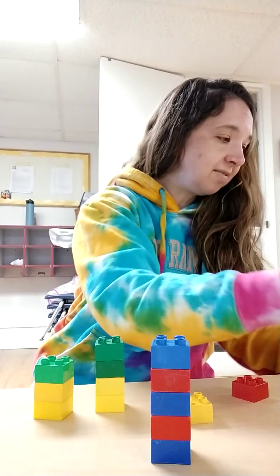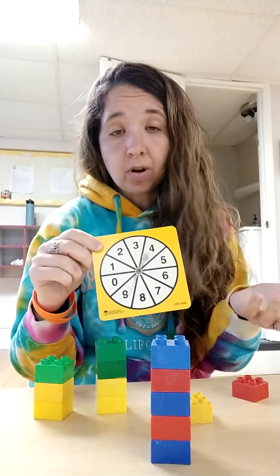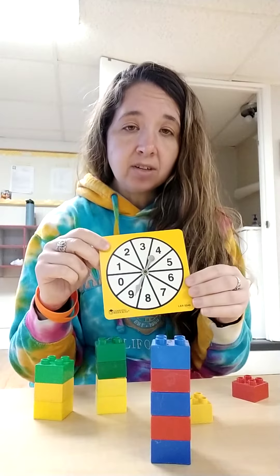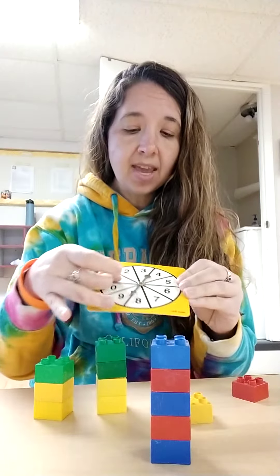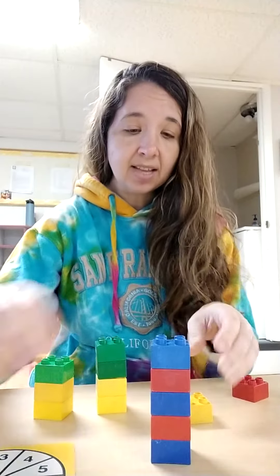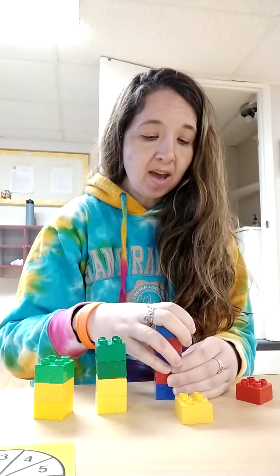Other activities that are included, we have spinners with numbers one through nine on them. You can use this with Duplo blocks or a lot of different materials in your house. You take turns with your child. They spin the spinner, what number it lands on. Mine landed on six and they can pick out six blocks from the bucket and build them up.